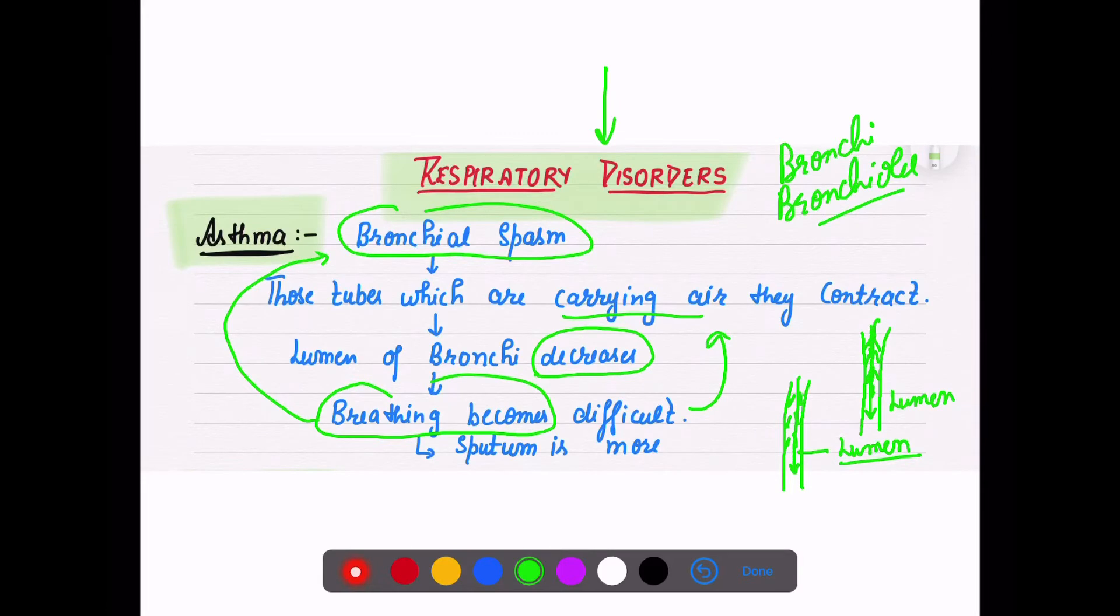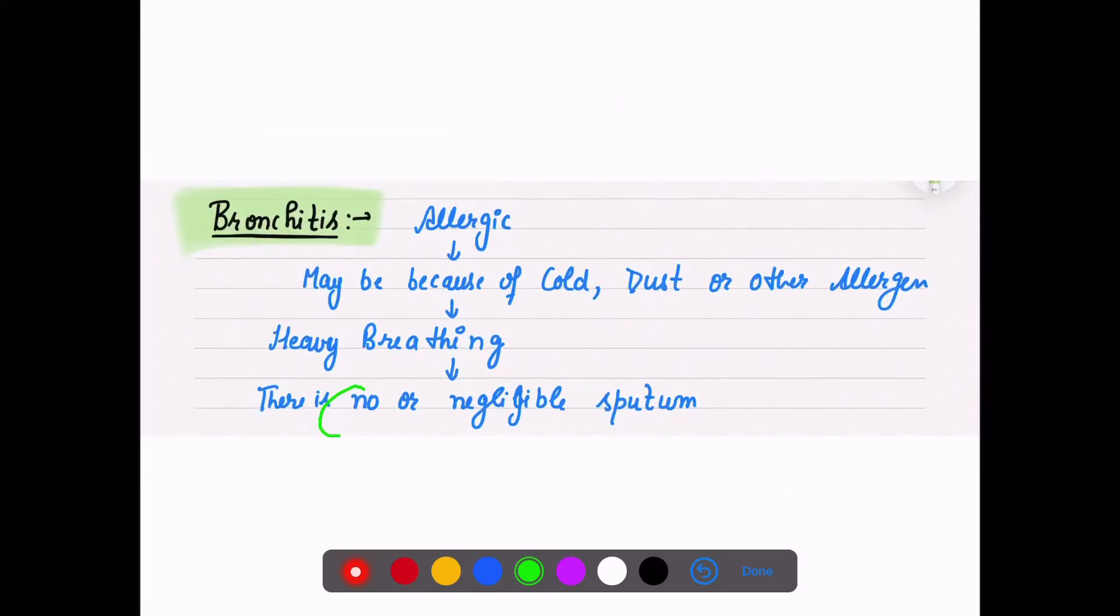The second is bronchitis. Bronchitis we call it as inflammation. It is also a very sensitive allergic kind of condition, same as asthma. They both also get aggravated.